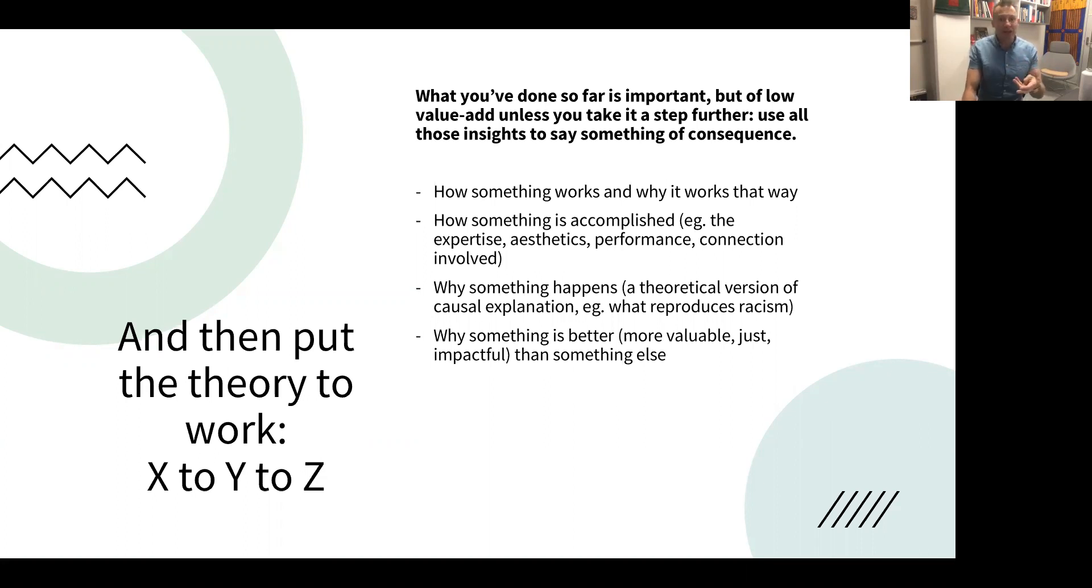You might be able to say why something happens, and that's a theoretical version of causal explanation, not an experimental kind of cause and effect. But for example, like why when so many people kind of accept that racism is not okay, and will regard themselves as not racist, racism is still being reproduced. Theory can give you that kind of why explanation.